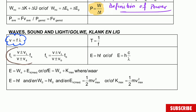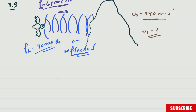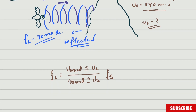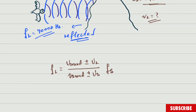The Doppler effect formula is: frequency of the listener equals the speed of sound plus or minus the speed of the listener, divided by the speed of sound plus or minus the speed of the source, multiplied by the frequency of the source. In this case, because the listener is moving towards the source, you use a positive sign on the numerator and a negative sign on the denominator.